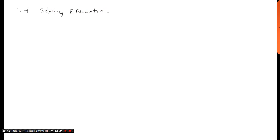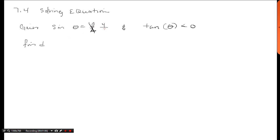Let me show you an example of what we've been doing so far. We've been saying things like: given that the sine of angle theta is 4/5 and the tangent of theta is negative, find cosine of 2theta. Notice we're finding what cosine of 2theta is — we're not really solving for theta. We've never truly found the angle that gives us 4/5; all we've done is use right triangle trigonometry and manipulated it to get an answer.